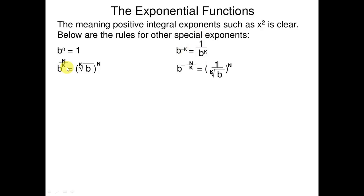b raised to power n over k equals the k-th root of b to the power n. b raised to power minus n over k equals 1 over the k-th root of b to the power n.